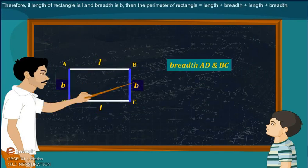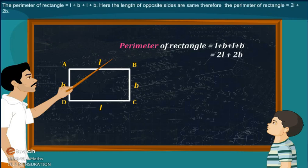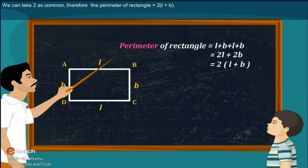Therefore, if the length of a rectangle is L and the breadth is B, then the perimeter equals length plus breadth plus length plus breadth, or L plus B plus L plus B. Here, the length of opposite sides are the same. Therefore, the perimeter equals 2L plus 2B. We can take 2 as common. Therefore, the perimeter of a rectangle is equal to twice length plus breadth, or 2 times L plus B.